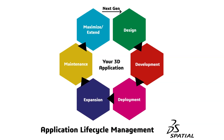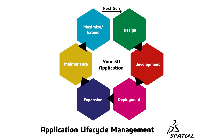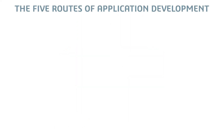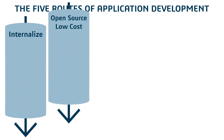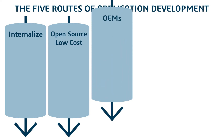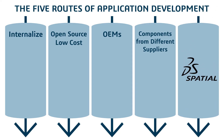A software application's lifecycle consists of many phases, each with specific objectives, challenges, and opportunities. All of these phases are managed through five different development paths called routes. Each route brings several challenges and benefits to consider before developing your application. The five routes include internalizing, integrating low-cost open-source technology, OEMs, using components from different suppliers, and application lifecycle management.